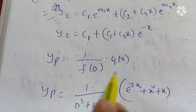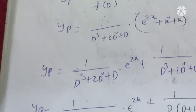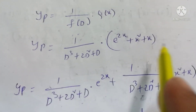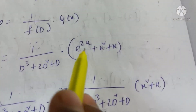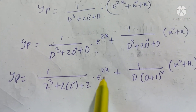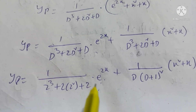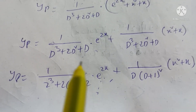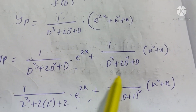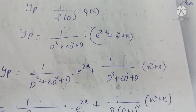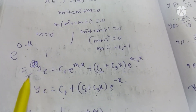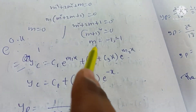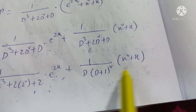For the particular integral, yp = 1/f(D) · φ(x), where f(D) = D³ + 2D² + D = D(D+1)². We split: 1/[D(D+1)²] acting on e^(2x) and 1/[D(D+1)²] acting on (x² + x).